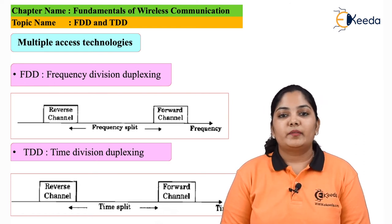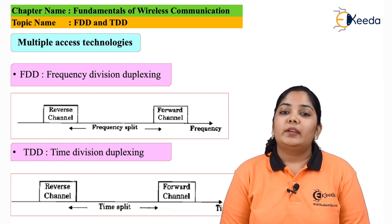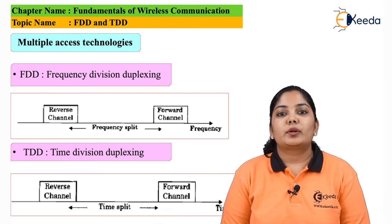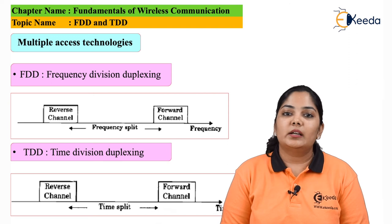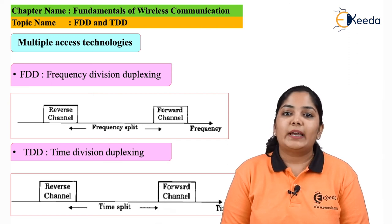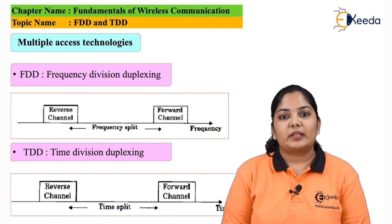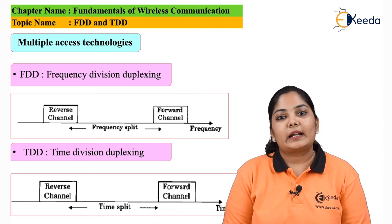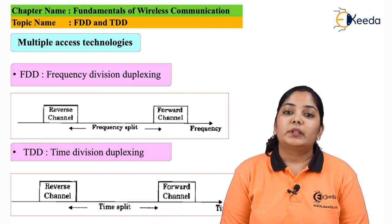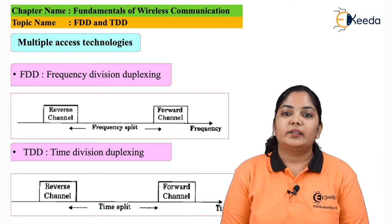In time division duplexing, the biggest advantage is that even though the time slots are different, we are using a single frequency, which makes this system very spectrum efficient. Single frequency is used for both transmission and reception, but the time slots used are different.